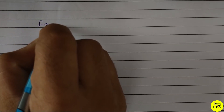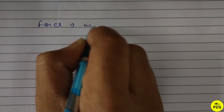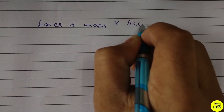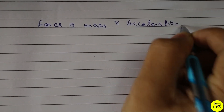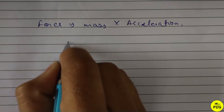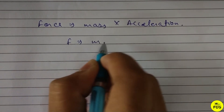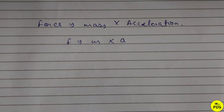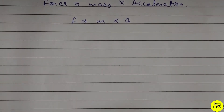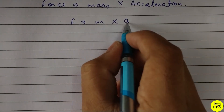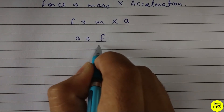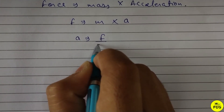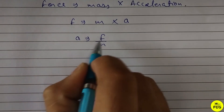Now, from Newton's second law, force equals mass times acceleration: F = ma. Therefore, acceleration a equals F divided by m.